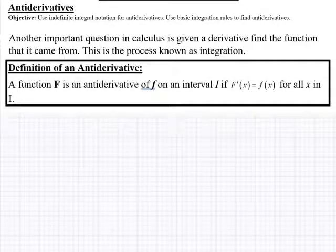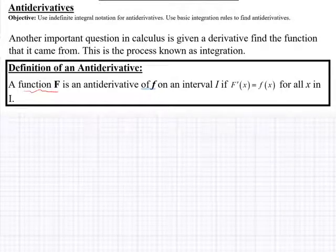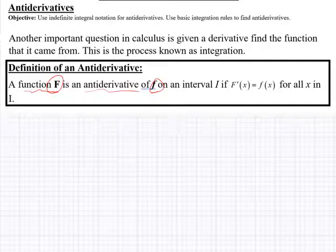Now we need to review your antiderivatives, or your integrals. I'll focus more on the indefinite integrals, and then you should easily be able to switch that over by doing definite integrals. The big thing here was the antiderivative concept and how to find an antiderivative for a given function. A function capital F is an antiderivative of lowercase f on an interval I if F prime of capital F equals f of x.